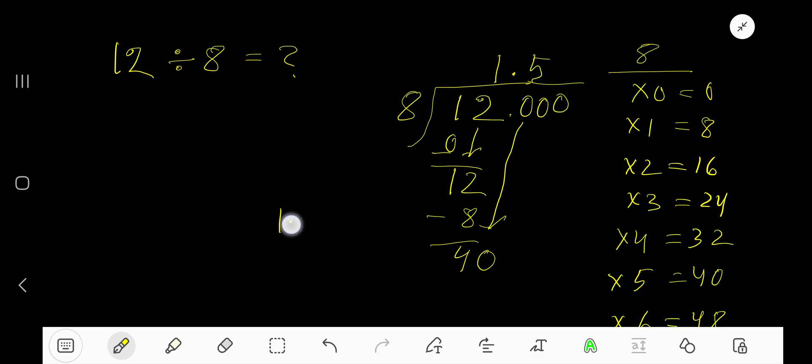So 1.5 is our answer. 5 times 8 is 40, subtract to get 0. As our remainder is 0, we are done.